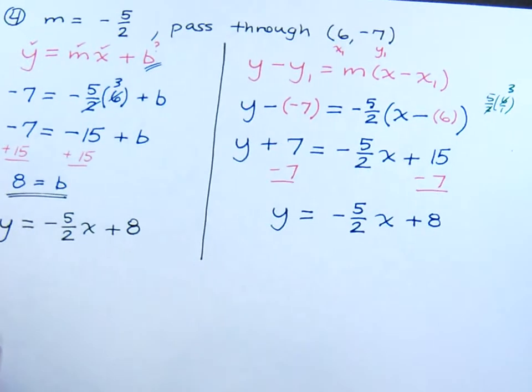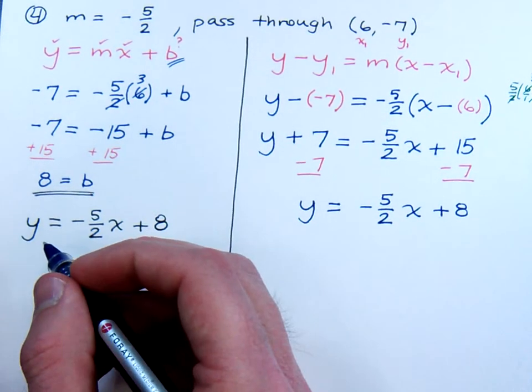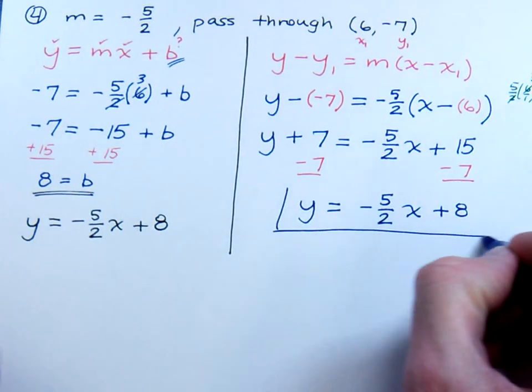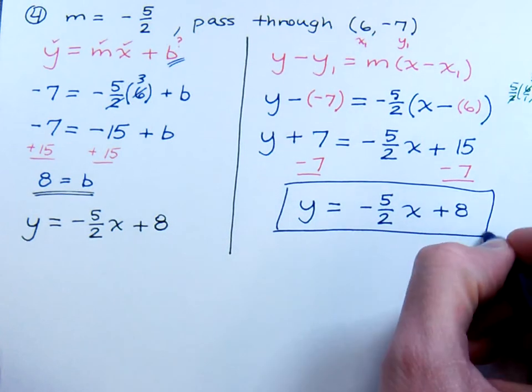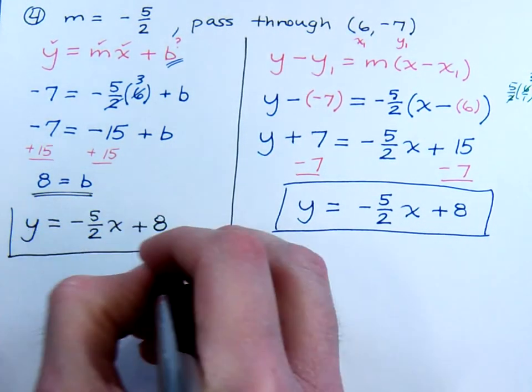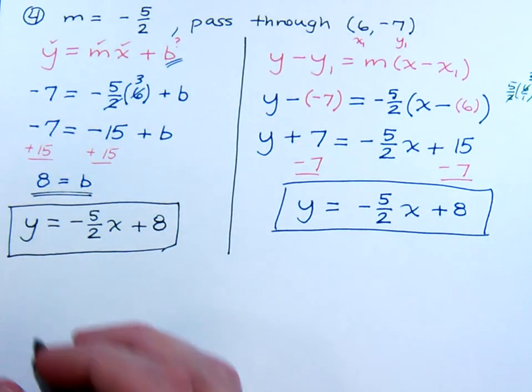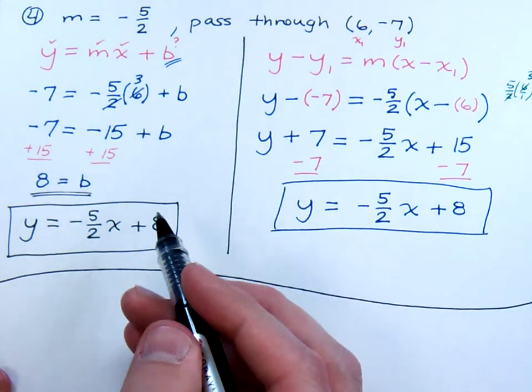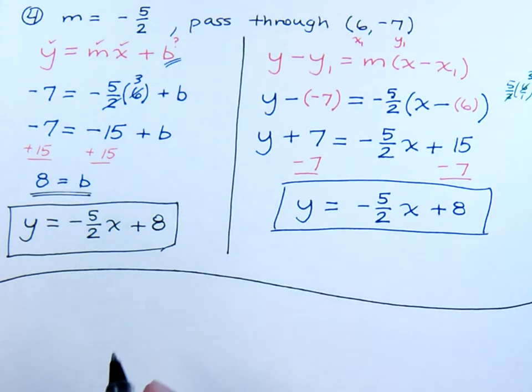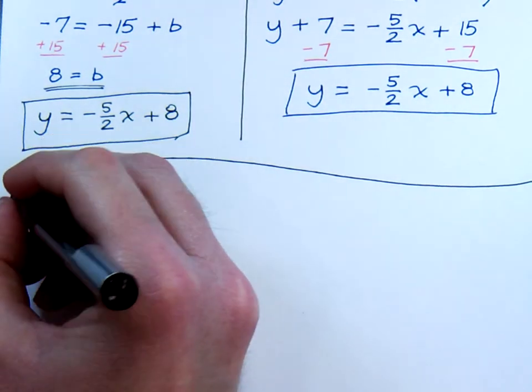And you see that that matches up with the equation that we had the first time. So it's going to make you feel good when you get the same answer from two different methods. All right, well, let's do another example here, but not quite like these. Suppose I don't give you the slope.